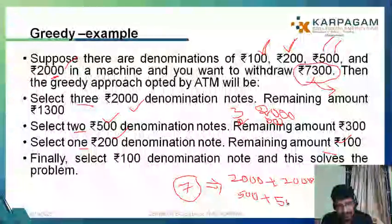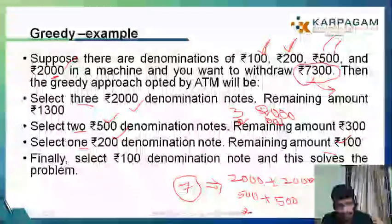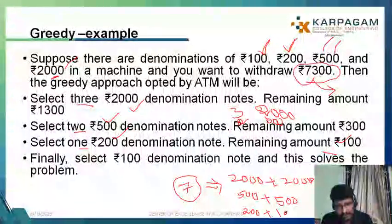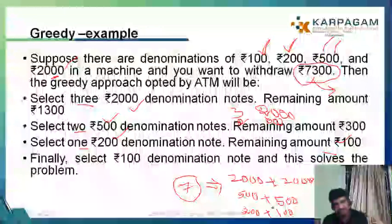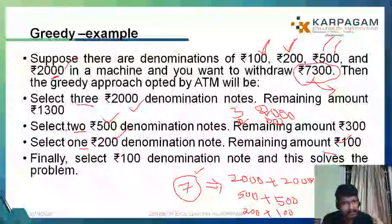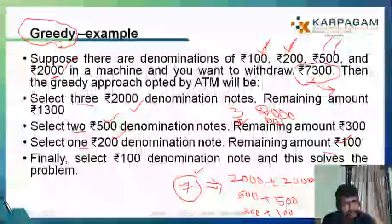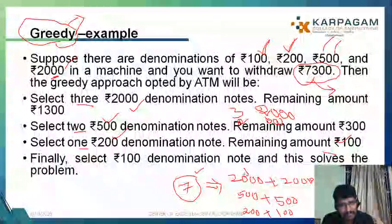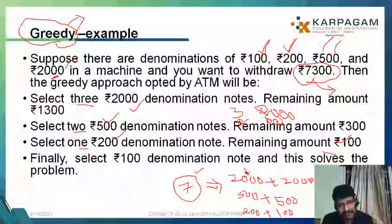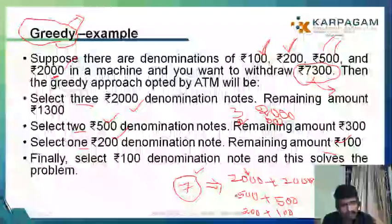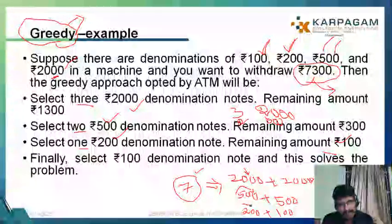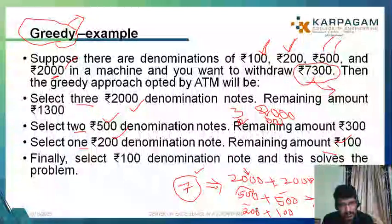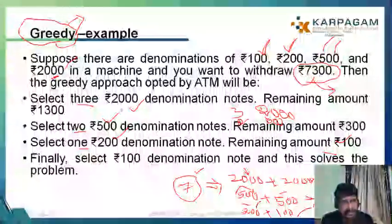So the minimum number of denominations is: three 2000 rupee notes, two 500 rupee notes, one 200 rupee note, and one 100 rupee note — that's 3 plus 2 plus 1 plus 1, giving 7 notes total. And remember, this ATM machine is applying a greedy approach. I try to take as many 2000 rupee notes as possible first — that's the greedy approach. Once I complete 6000, I cannot take another 2000, so I go for the next best solution available.